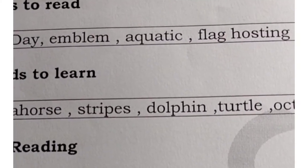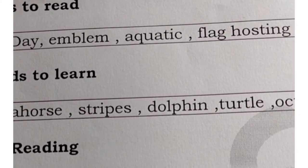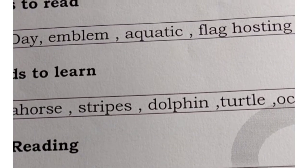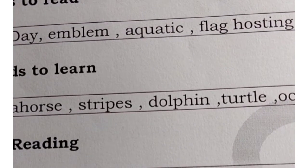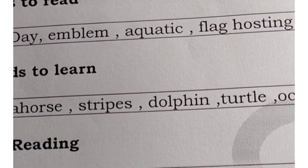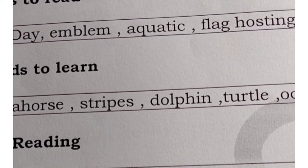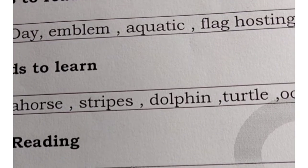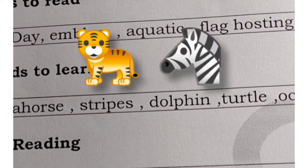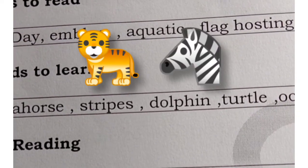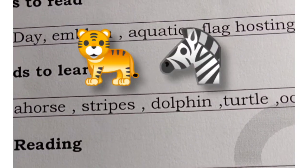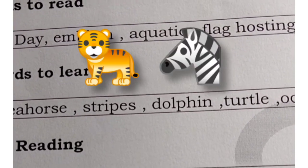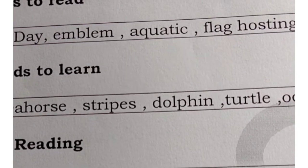Next: Stripes. S-T-R-I-P-E-S. Stripes means — as you can see on the tiger, they have stripes. Zebras also have stripes. So those are stripes.